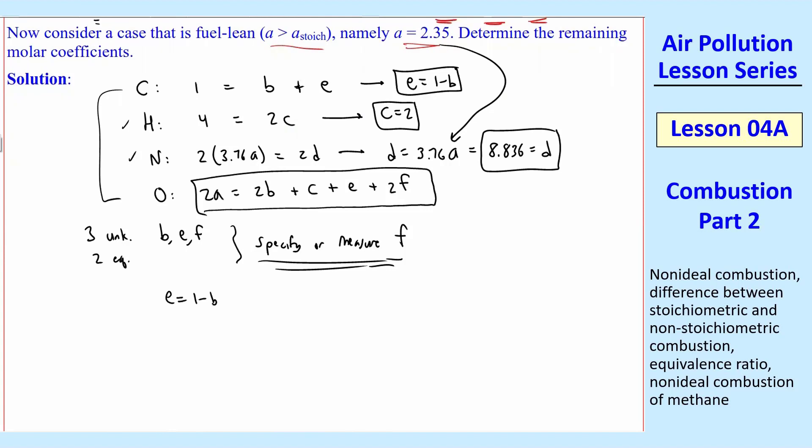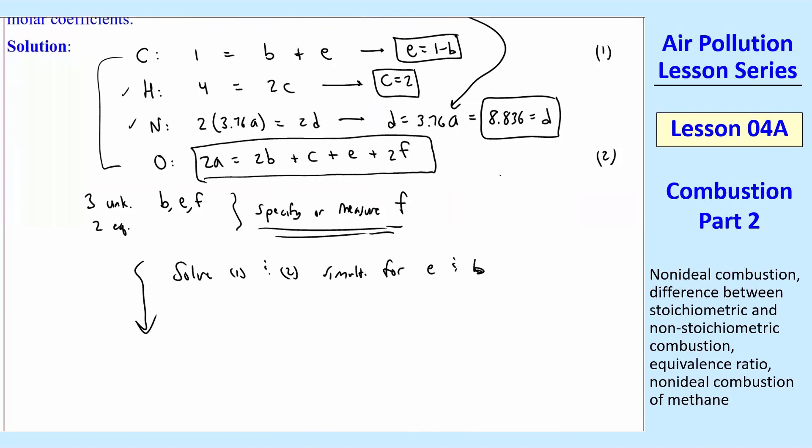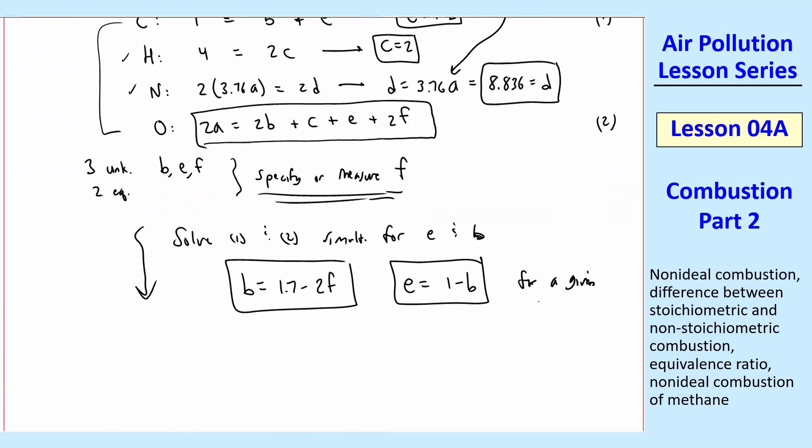So let's just take these equations that are left, E equal 1 minus B. And we can solve this one here, 2A equals that. So I'll just call this 1 and 2 instead of writing them out. So let's solve 1 and 2 simultaneously for E and B for a given F. And that's just a bunch of algebra that you should know how to do, substitute things in and work that out. And so what I get in terms of F then, B is 1.7 minus 2F in this case, and E is 1 minus B. So I can calculate B and then I can calculate E. This is for a given F, right? But we don't know what F is.